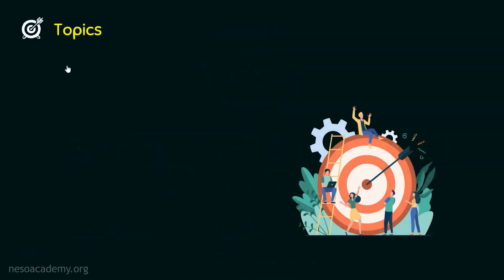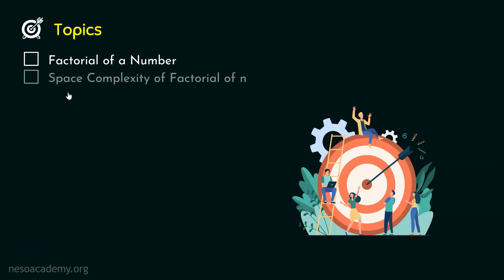The first topic of this lecture is factorial of a number. We will understand the concept of factorial of a number. After understanding this topic, we will move to the second topic — the space complexity of factorial of n — where we will understand how to find the space complexity of that algorithm.